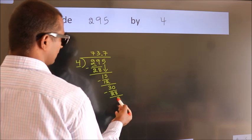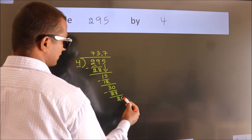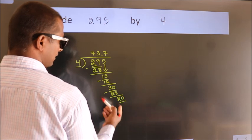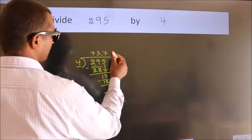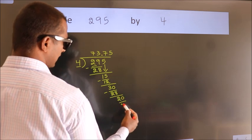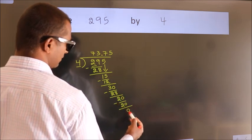After this, we already have the decimal, so directly take 0. So, 20. When do we get 20 in the 4 table? 4 times 5 equals 20. Now we subtract and get 0.